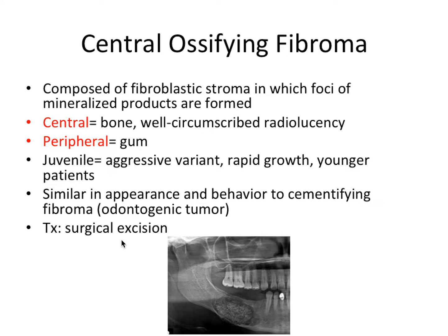First we're going to talk about the central ossifying fibroma. This is composed of fibroblastic stroma, or connective tissue, in which foci of mineralized products are formed. 'Ossifying' is referring to this sort of bony tissue. The mineralized products — you can see in this image here — we have this basically radiolucent lesion, but it contains radiopaque little specks of ossification and mineralized products at the center of the lesion.